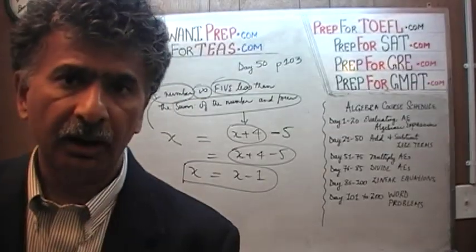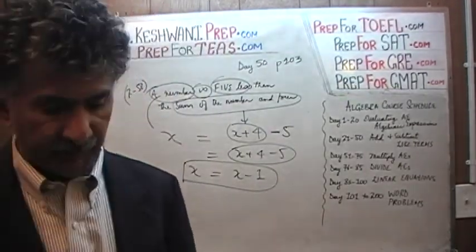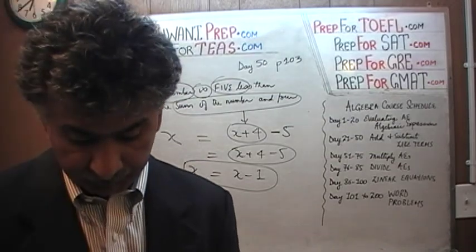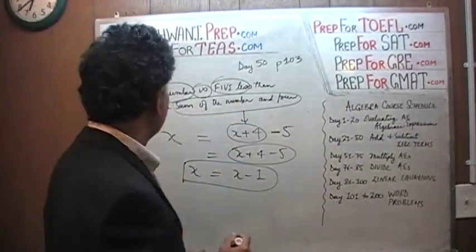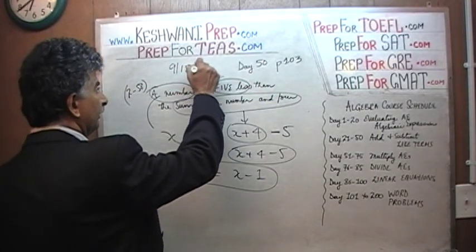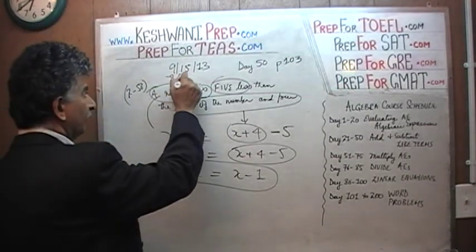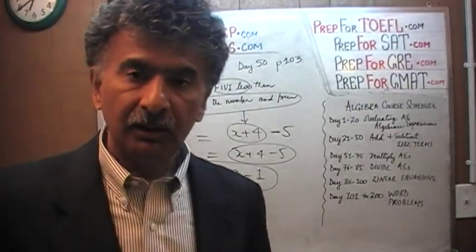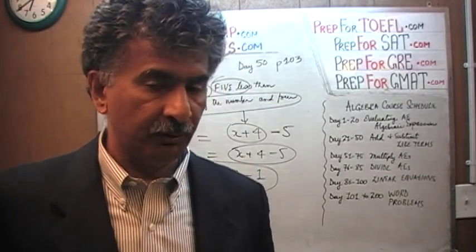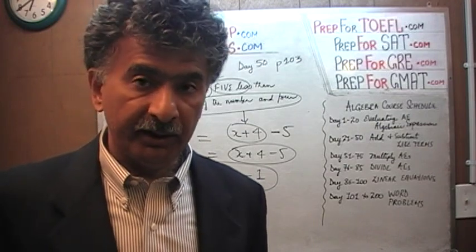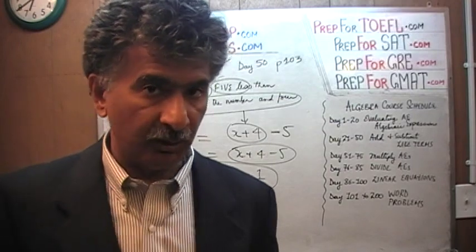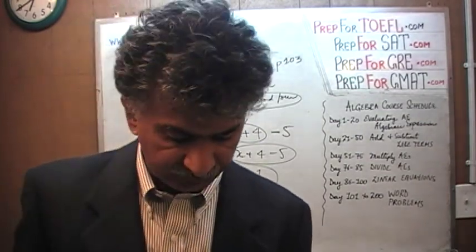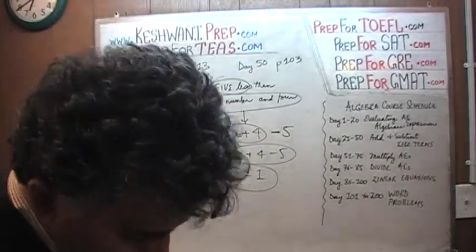Somebody did not do a very good job proofreading this. And this is not the first time — this is just the math portion. I do not deal with the grammar, reading, or science portions; I am a math tutor. I have been working on math problems since August 23rd, and today is September 15th, 2013 — about three weeks. In the math portion alone, this is the fifth misprint we have found in the book. But anyway, that is what it says. Let's move on to the next page, page 104.